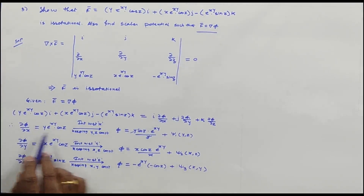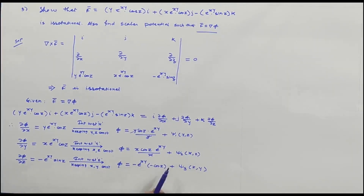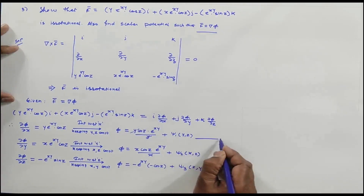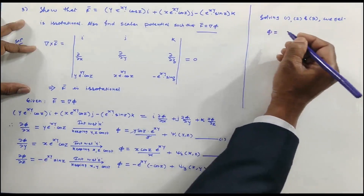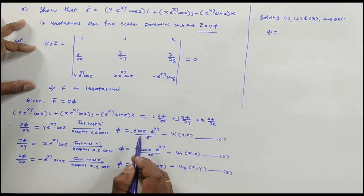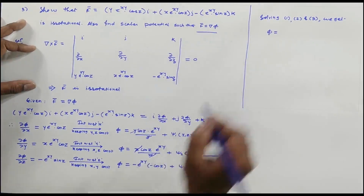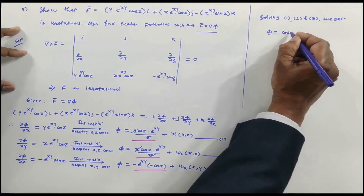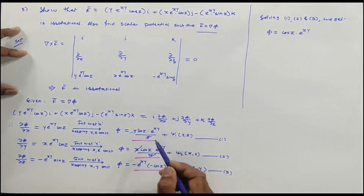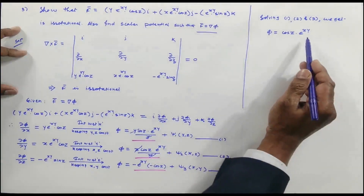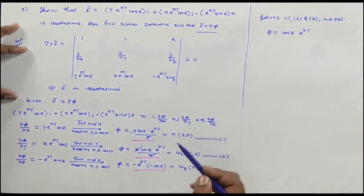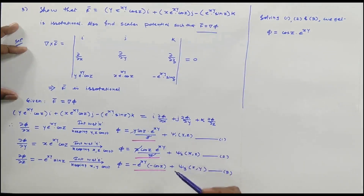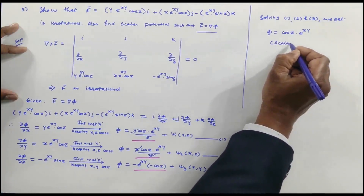Solving equations 1, 2, and 3: the common term across all three is e^(xy)cosZ, and there are no uncommon terms. So φ = e^(xy)cosZ + C. This is the scalar potential. The values of ψ₁, ψ₂, and ψ₃ are all 0.